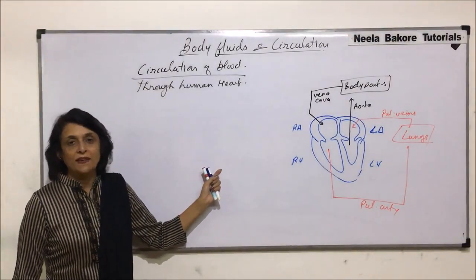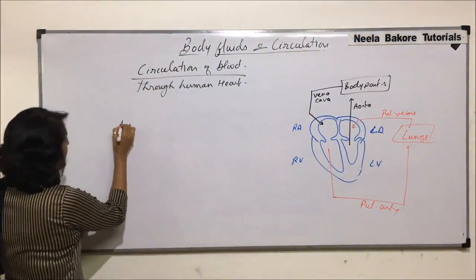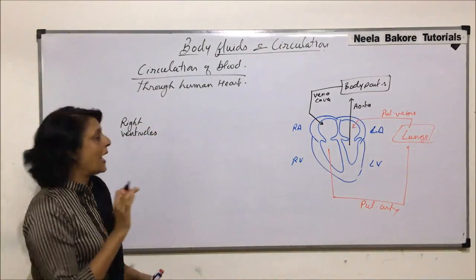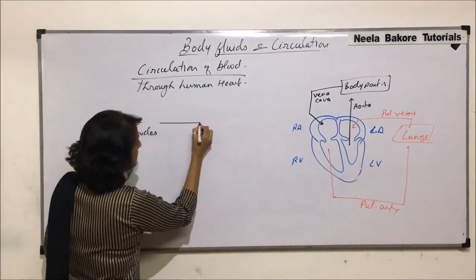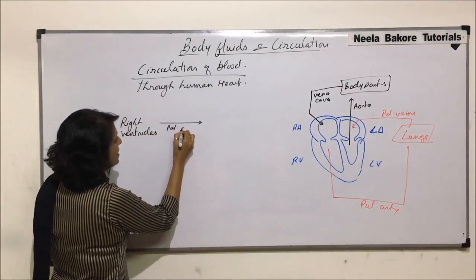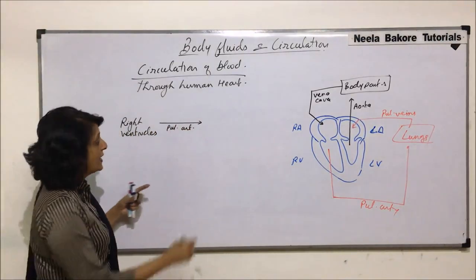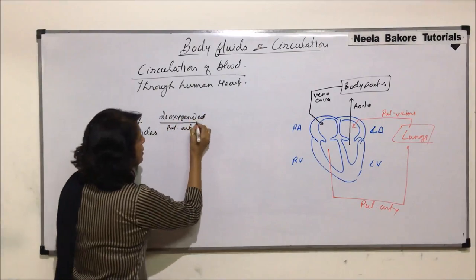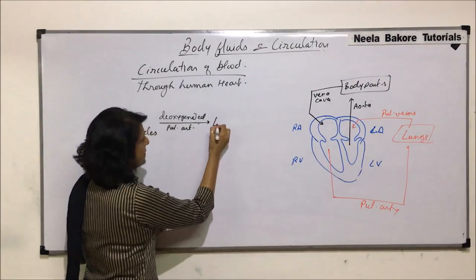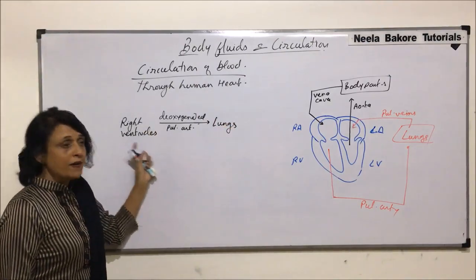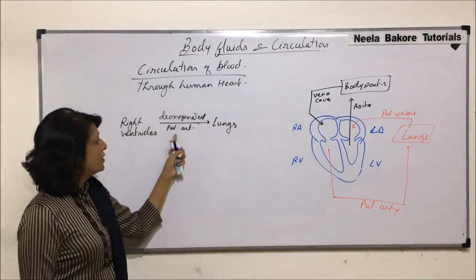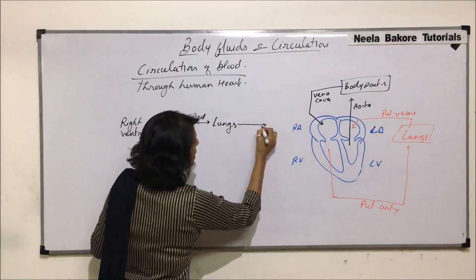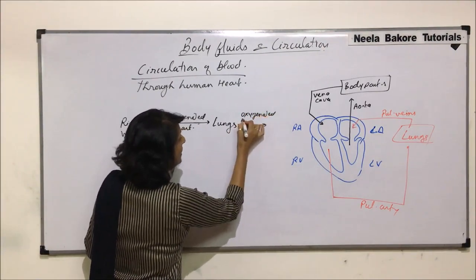This circulation takes place in a cyclic manner, so we can start from anywhere. Let us start from the right ventricle in our flowchart. From the right ventricle, the blood is taken by the pulmonary artery. The blood being taken is deoxygenated, and this deoxygenated blood goes to the lungs.